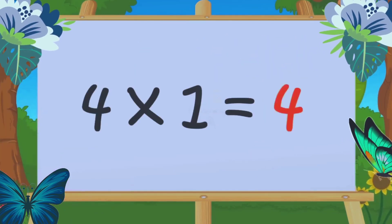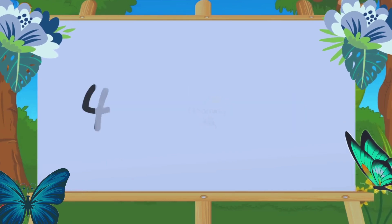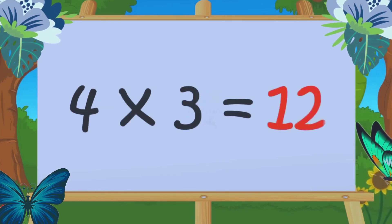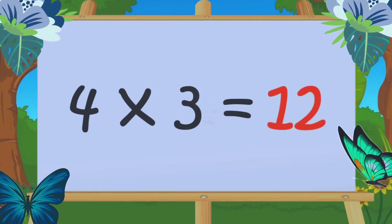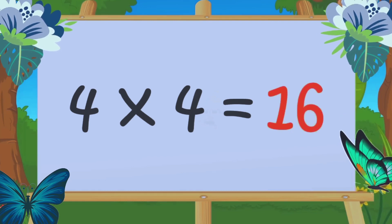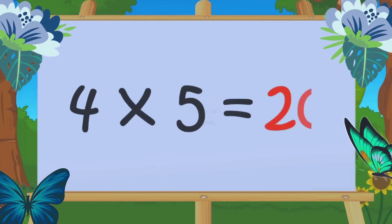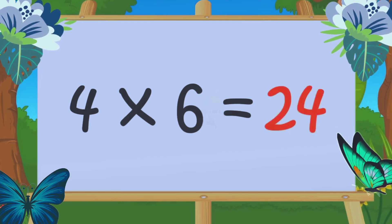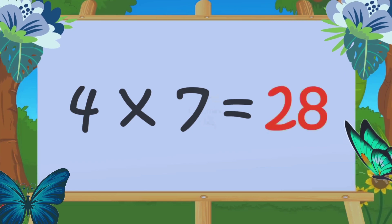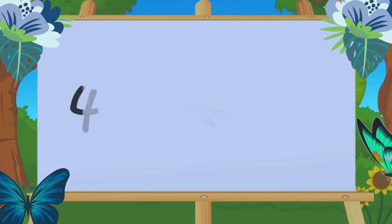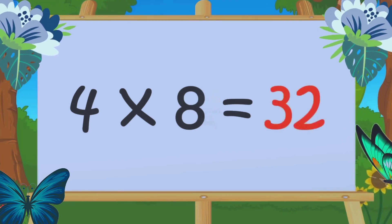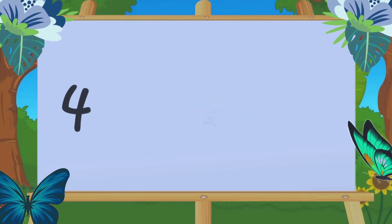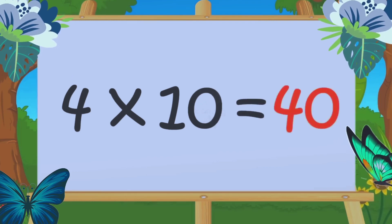Table of 4: 4 1s are 4, 4 2s are 8, 4 3s are 12, 4 4s are 16, 4 5s are 20, 4 6s are 24, 4 7s are 28, 4 8s are 32, 4 9s are 36, 4 10s are 40.